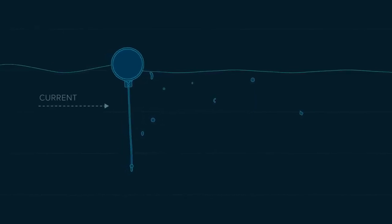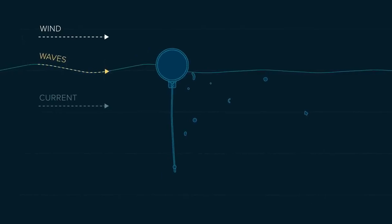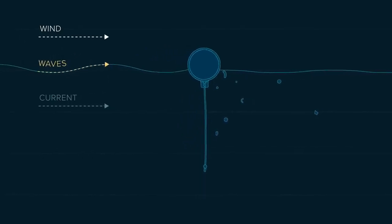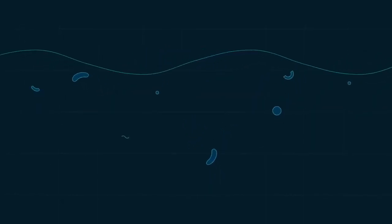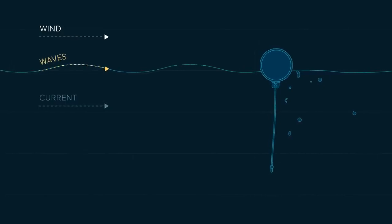Both the plastic and system are being carried by the current. However, wind and waves propel the system only, as the floater partly sticks above the surface while plastic is primarily just beneath it. The system thus moves faster than the plastic, allowing the plastic to be captured.